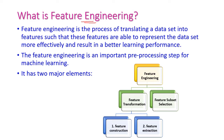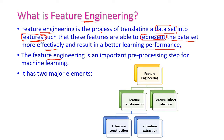Now let us see what is feature engineering. Feature engineering is a process of translating a dataset into features such that the features are able to represent the dataset more efficiently and result in better learning performance. It is a very important pre-processing step for machine learning.